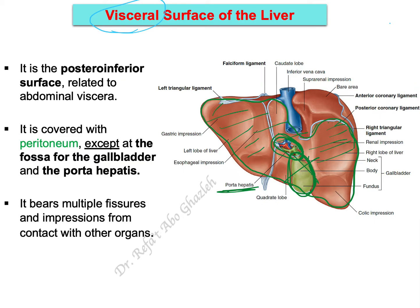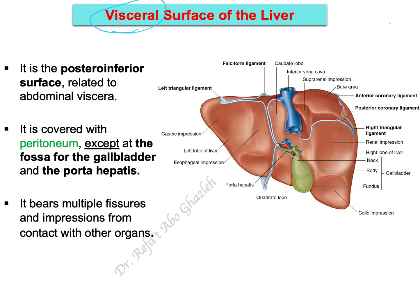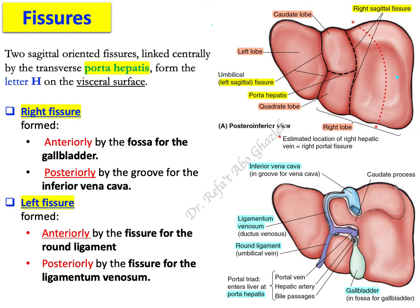If you look at the visceral surface of the liver, you can see there are many impressions located against different abdominal organs and structures — we'll talk about those. There are also fissures seen here and there. Let's start first by talking about the fissures.